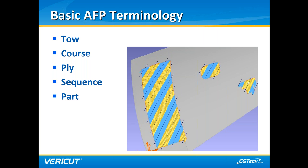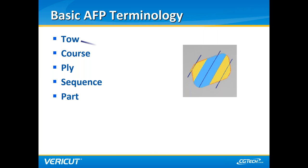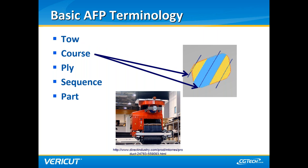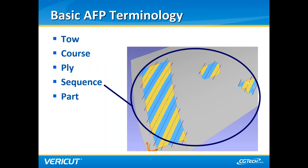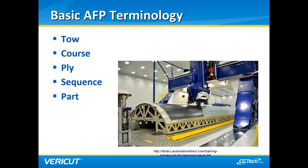In the case of AFP, the end effector — the part of the machine that material is fed from — has multiple toes of material. These are slit into the widths mentioned before, and an end effector can have as few as one toe to up to 24 or more. In ATL, courses are made up of one or more tapes. Toes or tapes make up courses; multiple courses make up plies; multiple plies on the same layer make up a sequence; and multiple sequences make up a part, like this fuselage panel for the Airbus A350.